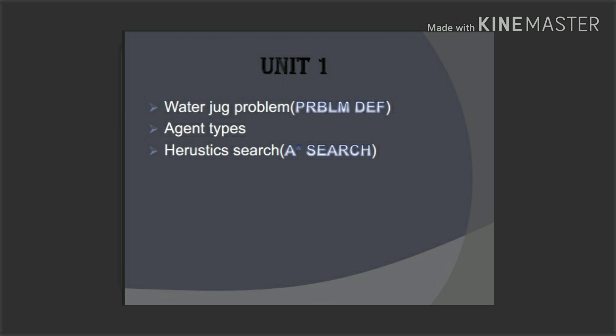And the answer is any search algorithm. Now the important question is the agent and order types. So the question covers all topics. If you want to follow the class, follow the questions. That is the first unit.